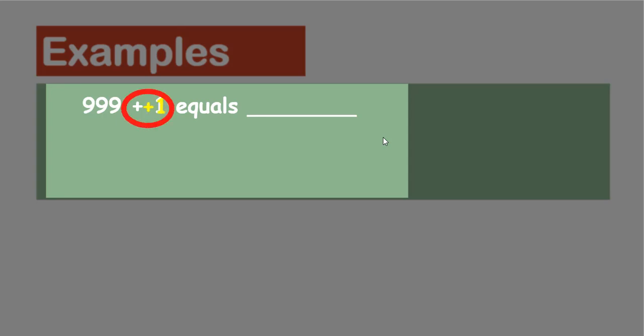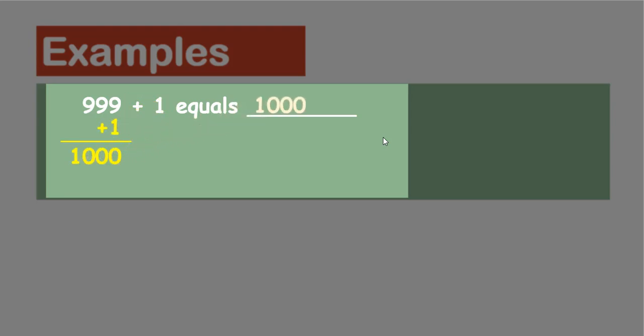The next problem: 999 plus 1 equals dash. Here, plus 1 represents successor. When we add one to 999, we get 1000, which is the successor of 999.